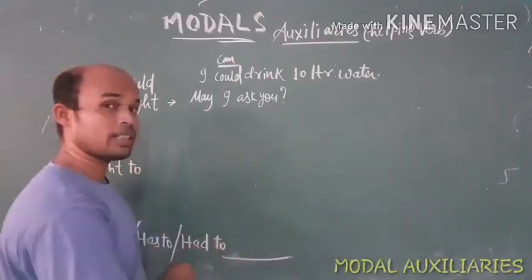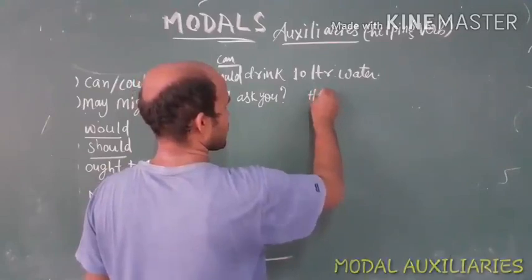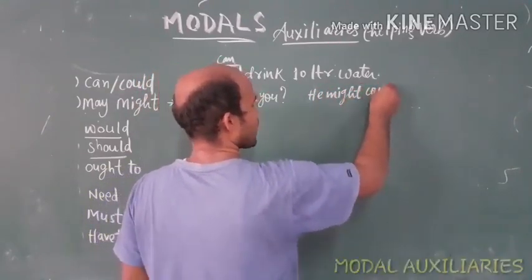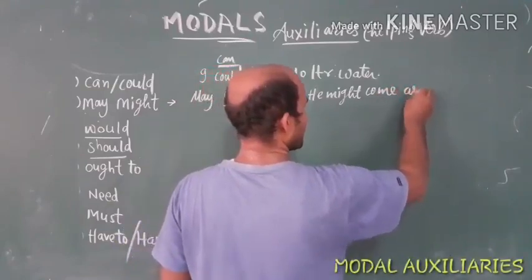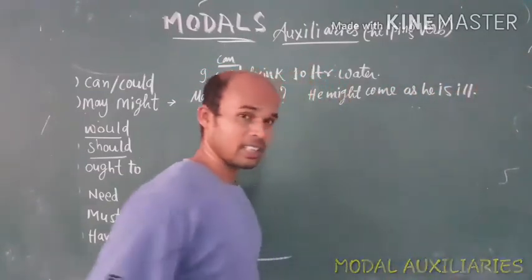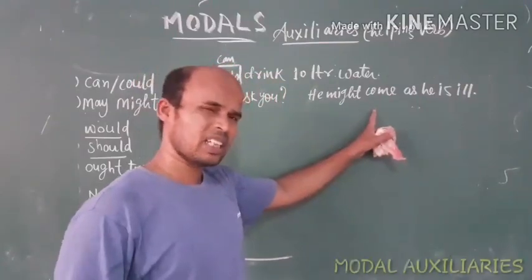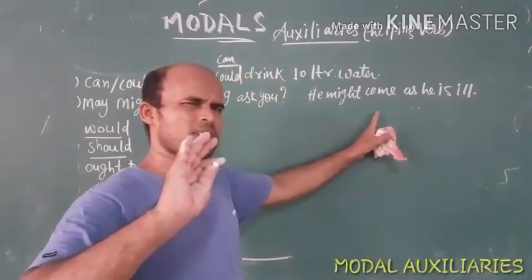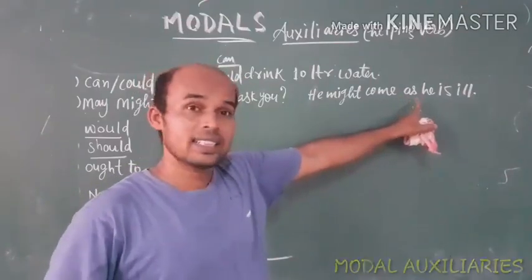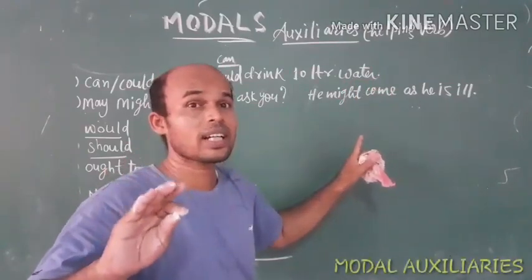Now for might: 'He might come, as he is ill.' Here might is used because the possibility is very less. The reason is given — as he is ill — so there is very little possibility of him coming. Might expresses low or uncertain possibility.